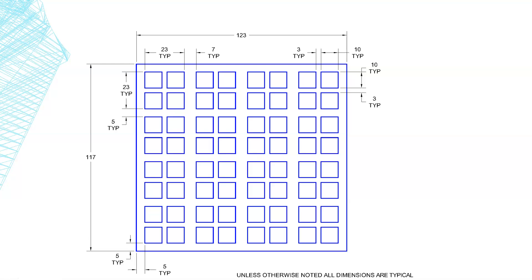Before we get started, let's look at some things on here that I did intentionally. You'll see that a lot of these dimensions have the word 'typical' or 'typ' underneath — that is shorthand for typical. Some drafters or designers will put all of these typicals on the drawing, or cover it in a note at the bottom. Either is acceptable, so anytime you get a drawing it's best to read the notes.